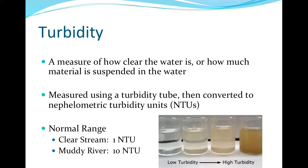Turbidity is a measure of how transparent the water is, measured as a depth in centimeters or meters. The clearer the stream or lake, typically the more healthy it is. Turbidity increases due to suspended solids such as soil washed into the water body. Deforestation, construction, and agriculture can cause increases in turbidity. Another source of increased turbidity, or decreased transparency, is algal growth. Algal biomass caused by nutrient enrichment negatively impacts water transparency.